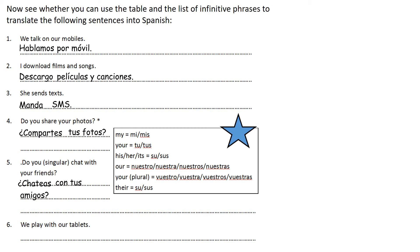Our last one: we play on our tablets. We've got jugar, so it's an AR verb — we play becomes jugamos. And then con nuestras tabletas. Why nuestras? Well, it's not mi tableta — we have to go from my tablet to our tablets. And because tableta is feminine, we need nuestras, feminine plural, and we put the S on the end: tabletas, not just one tablet.